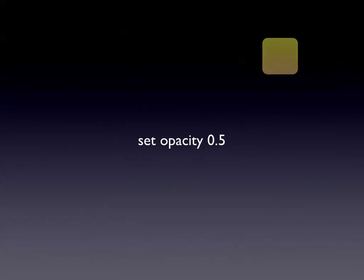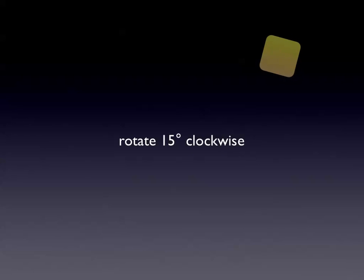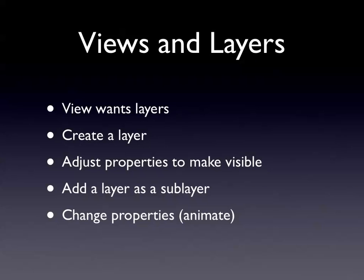You can talk to that object and say, change your opacity — and it will change in an animated way. Or you can ask it to rotate, and it will rotate in an animated way. You get this smooth, gorgeous animation. What we need to play with is the views and the layers. Views on Mac OS X 10.6 don't support animation out of the box — you have to turn it on. There's a concept of turning on the layers by saying the view wants layers. Once you've got that, you can manipulate the layer, add other layers to the view hierarchy, and adjust properties. As you change them, they animate.